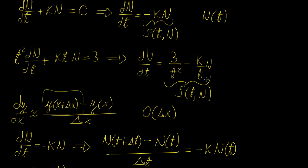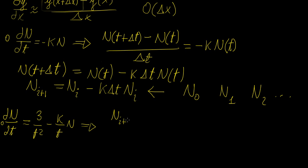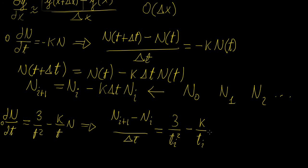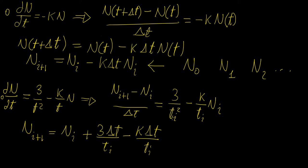We can do the same for the second equation: dn/dt = 3/t² - (k/t)·n. Substituting the forward difference gives (n_{i+1} - n_i) / Δt = 3/t_i² - (k/t_i)·n_i. Remember everything needs a subscript since we're addressing values in a vector. Solving for n_{i+1}: n_{i+1} = n_i + 3·Δt/t_i² - k·Δt/t_i·n_i. That's our finite difference equation.